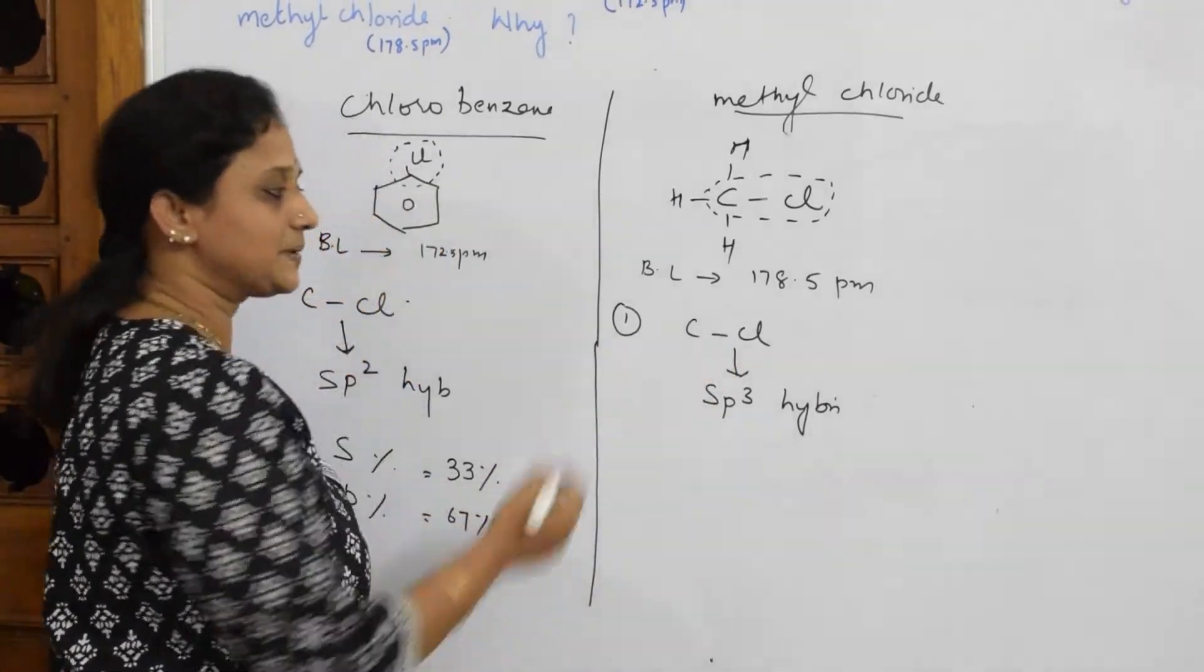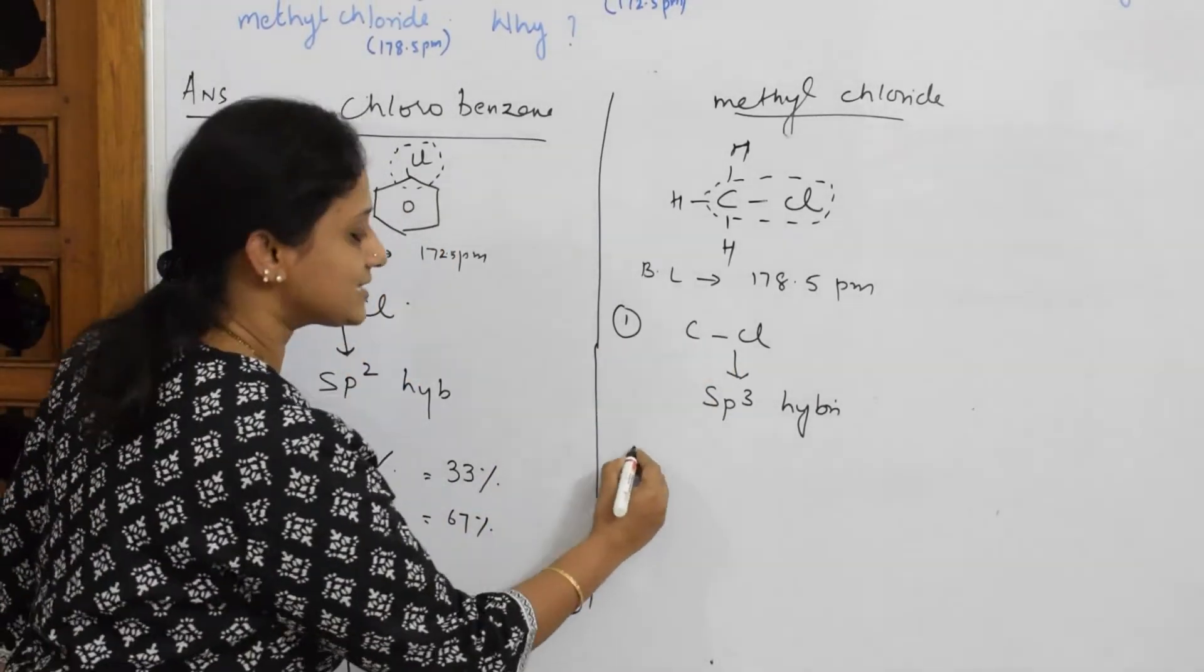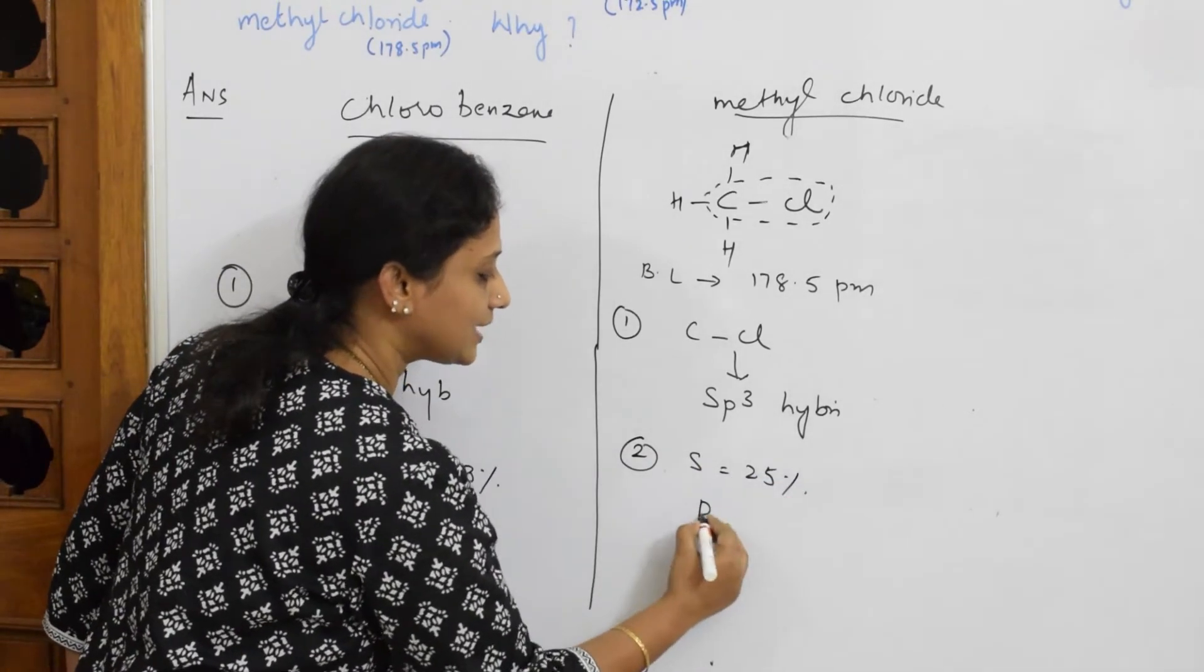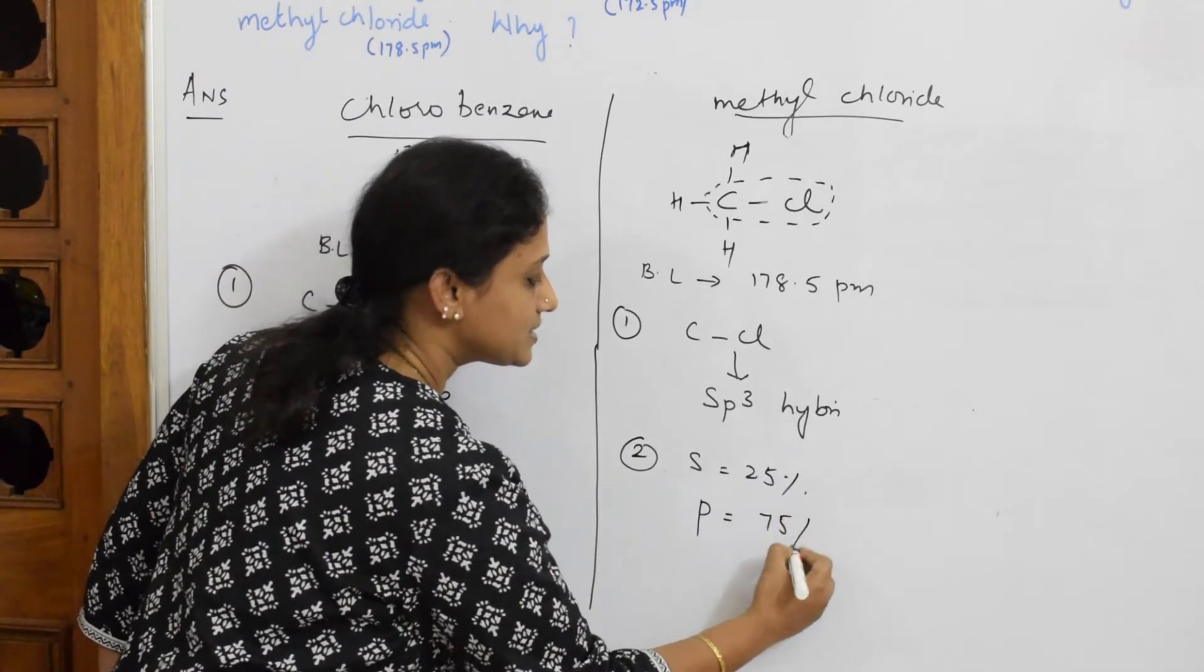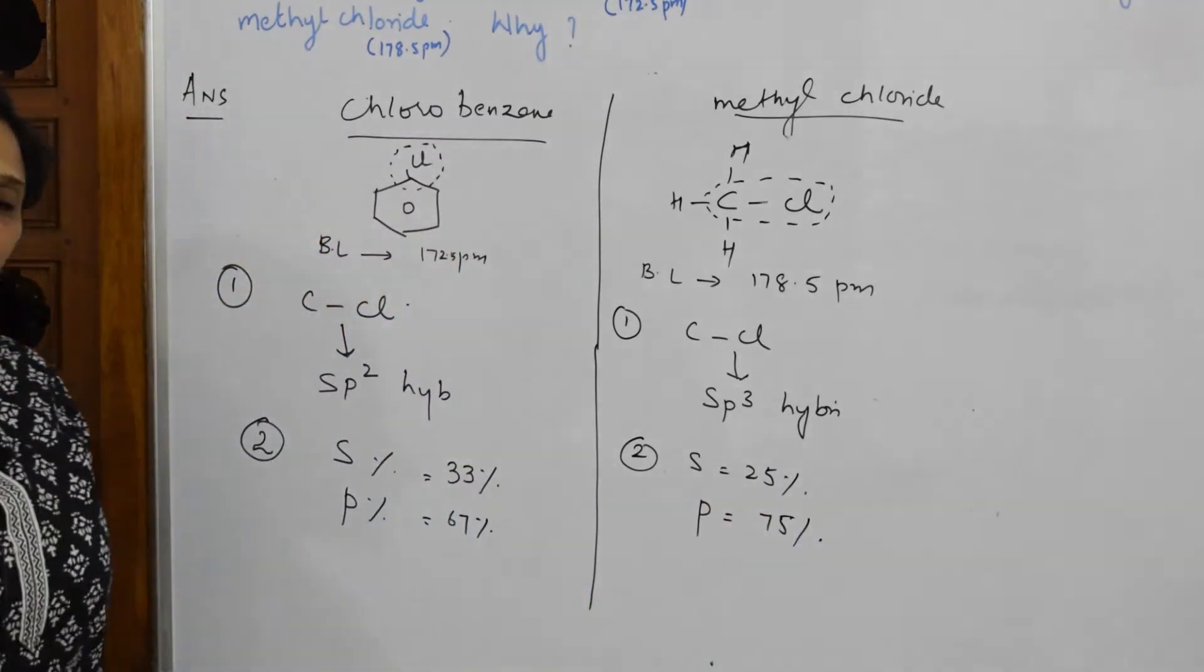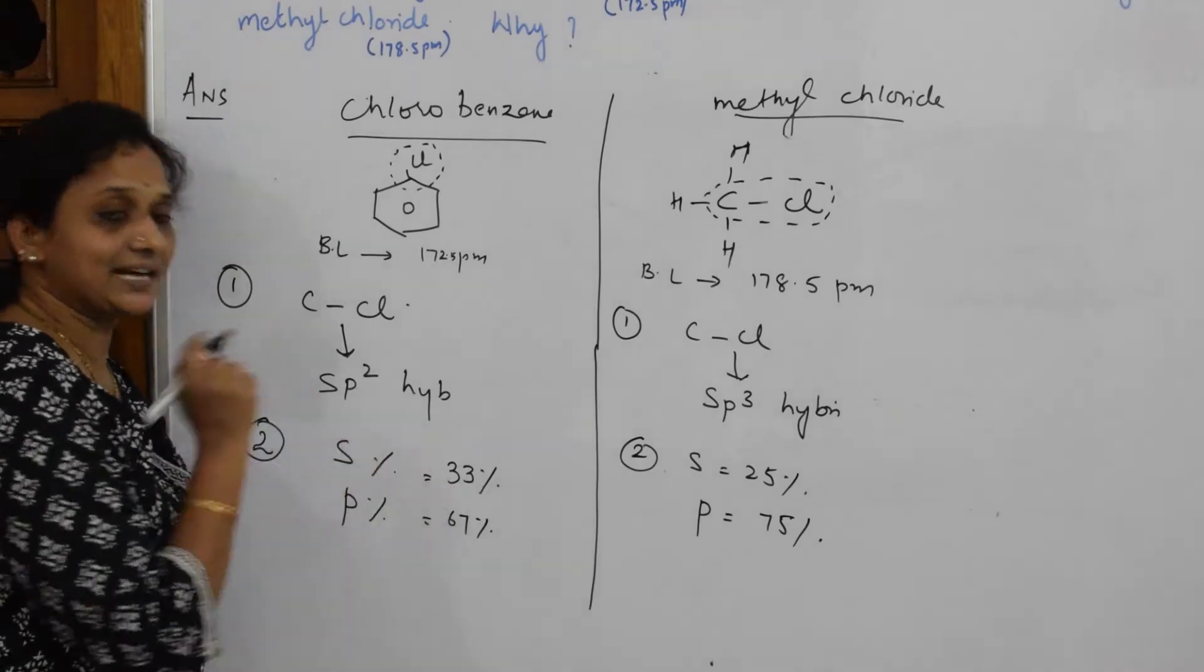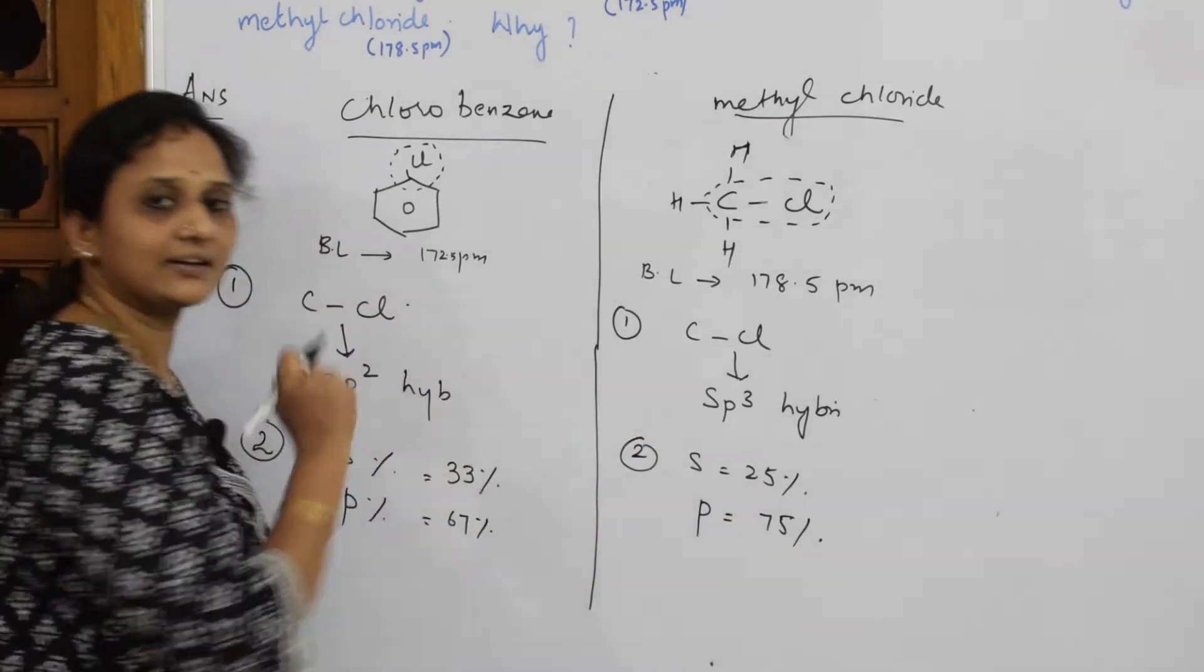When I come to your sp3 hybridization, your s character would be 25% and your p character would be 75%.